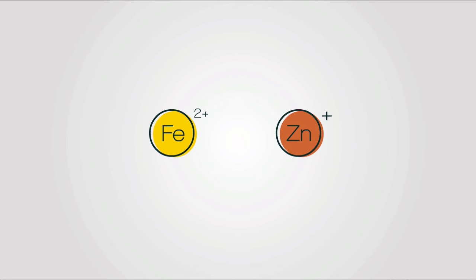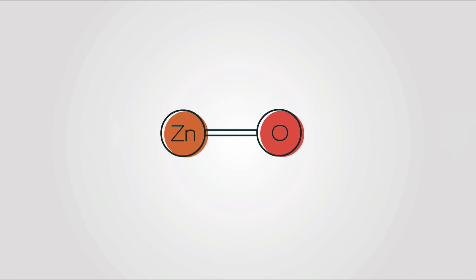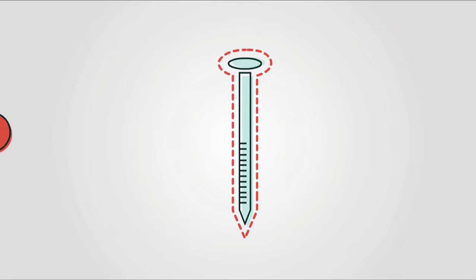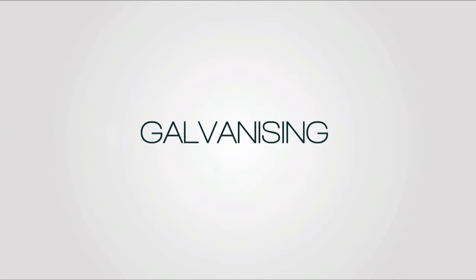the zinc forms a zinc oxide layer quickly. The iron underneath is protected. This process is called galvanising and can last up to 100 years.